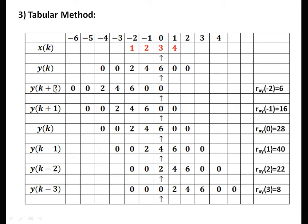For k plus 2, we shift the arrow to the right, but on the plot the signal shifts to the left by 2 positions, giving {0, 0, 6, 4, 2}. For k plus 1, shift right by 1 gives {0, 6, 4, 2}. The original signal stays as is. For k minus 1, shift left by 1: signal starts from 4. For k minus 2, signal starts from 2. For k minus 3, signal starts from 0. Doing corresponding element multiplication gives R_xy = {6, 16, 28, 40, 22, 8}.